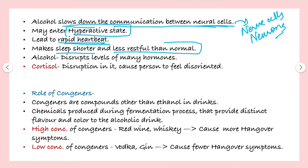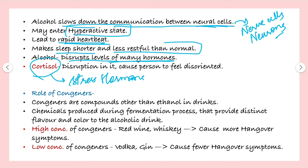Alcohol also disrupts the levels of many hormones, and one of them is cortisol. Cortisol is a stress hormone that basically regulates the body's stress response. If it gets disrupted, a person will feel disoriented.